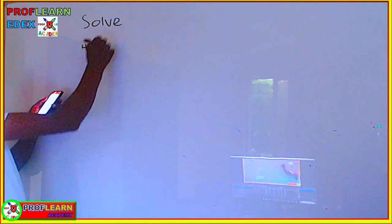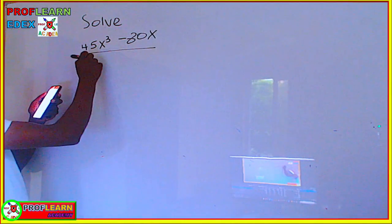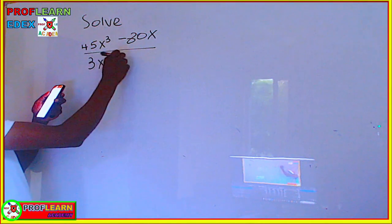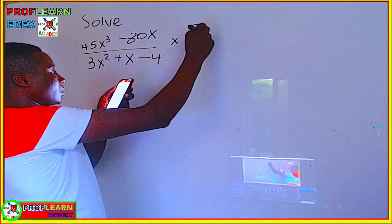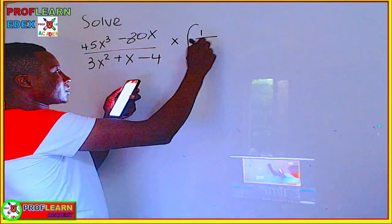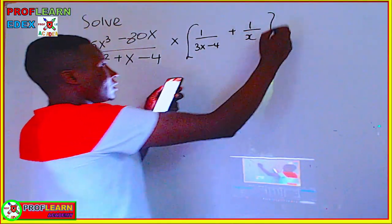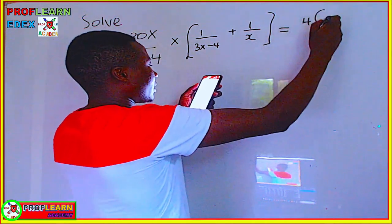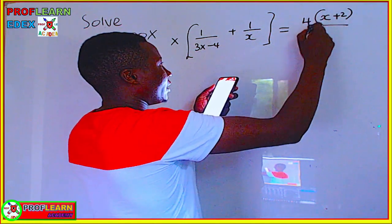So the question says: solve. We have 45x squared minus 80x, divided by 3x squared plus x minus 4, and this is multiplied by the bracket containing 5 over 3x minus 4, plus 1 over x. This equals 4 times the bracket x plus 2 over 5x minus 8.